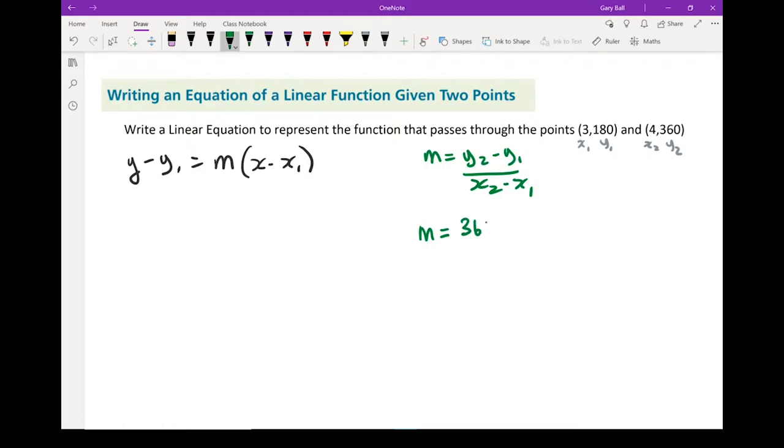y2 is 360 minus y1, so negative from the number is positive. It's going to stay minus 180. x2 is 4 minus x1, which is 3. 360 minus 180 is 180. 4 minus 3 equals 1. Slope equals 180.